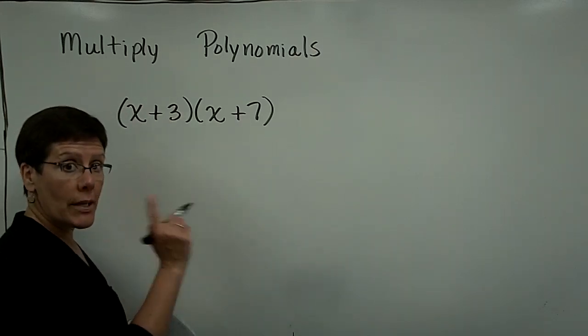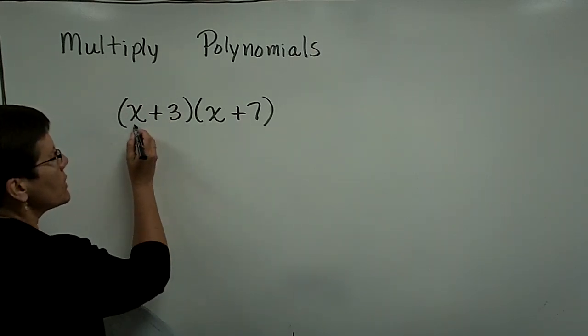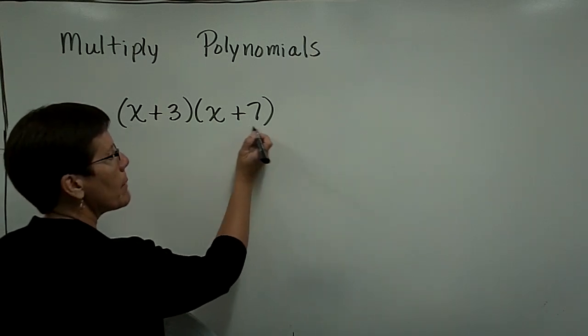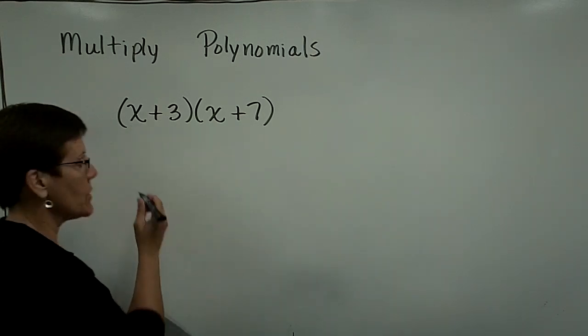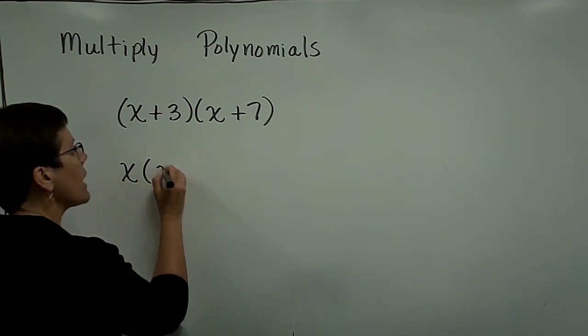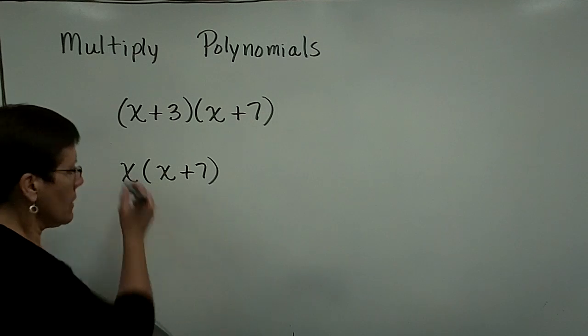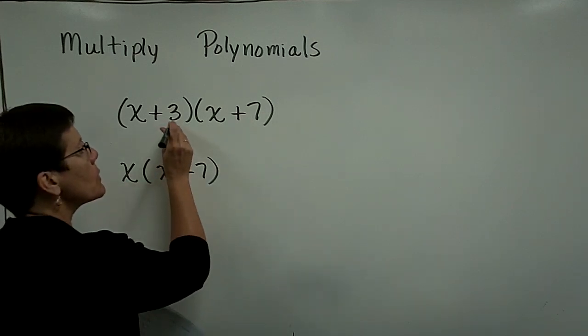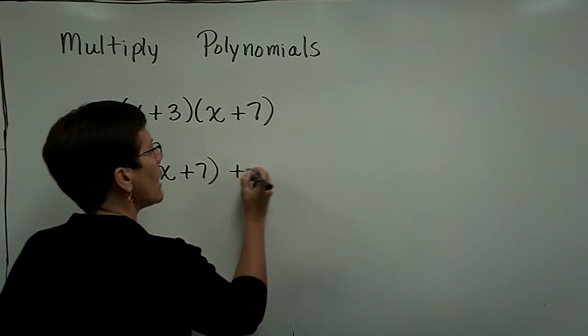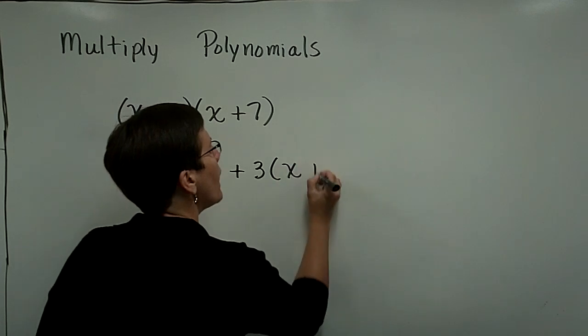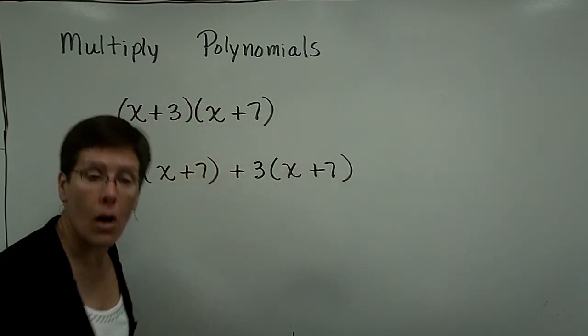But when you have a binomial times a binomial, essentially this x has to be multiplied by both of those terms. That x would have to be multiplied by both the x and the 7, and we would distribute that. This 3 right here, this plus 3, would have to be multiplied by the whole x plus 7 also.